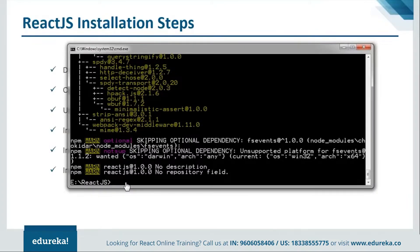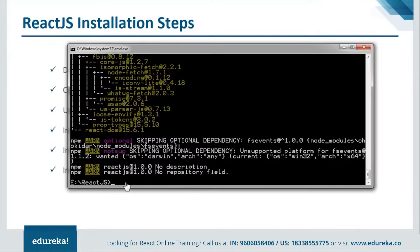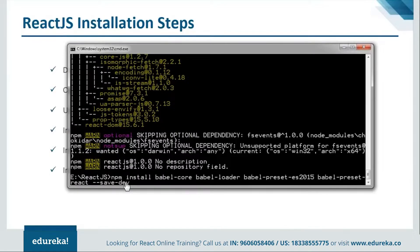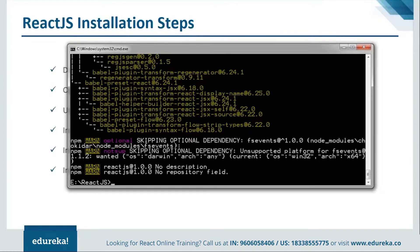Next, install React by typing npm install react react-dom --save. Once that's done, we'll move on and install Babel using npm install as well. Once all installations complete, we're done with all our modules and good to go with coding.